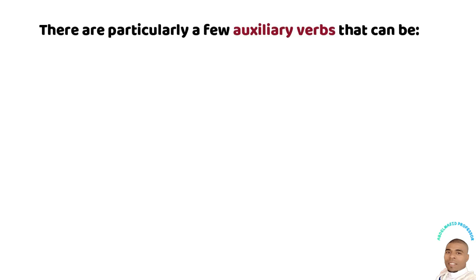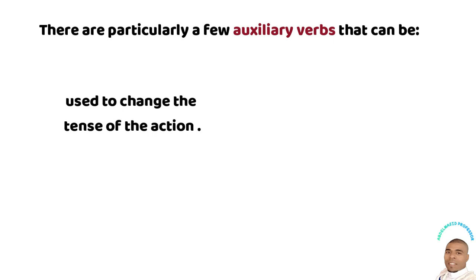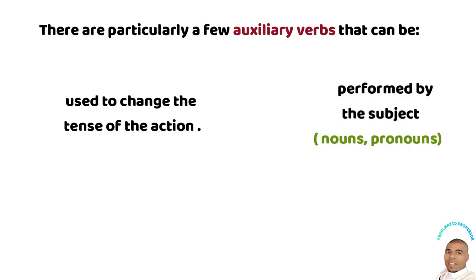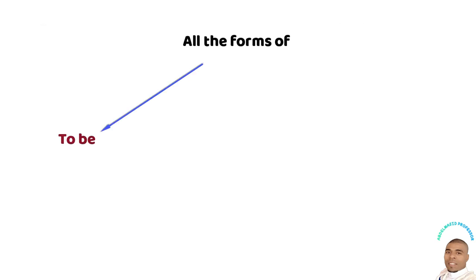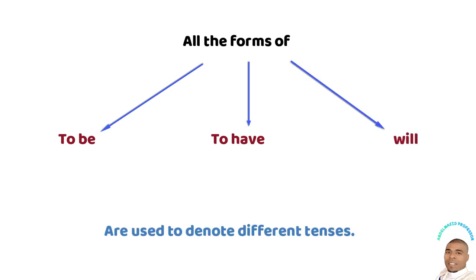Auxiliary verbs are used to alter the tense of a sentence. There are particular auxiliary verbs that can be used to change the tense of an action being performed by a subject — a noun or pronoun — in a context. For example, forms of 'to be', forms of 'have', and forms of 'will' are used to denote different tenses.